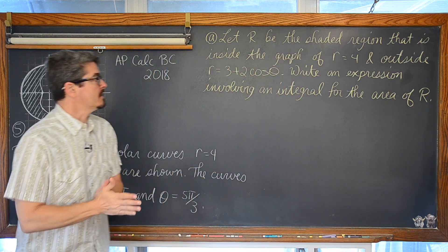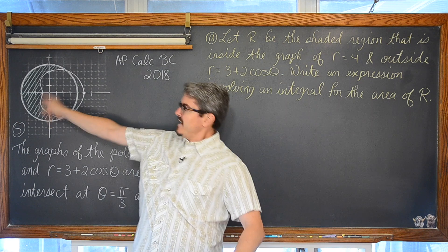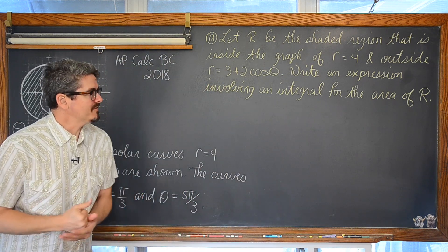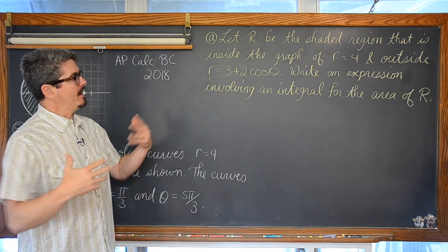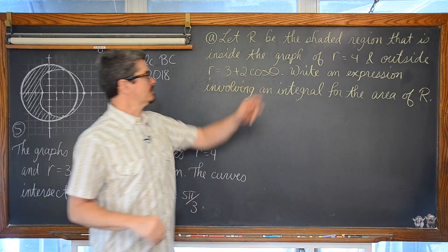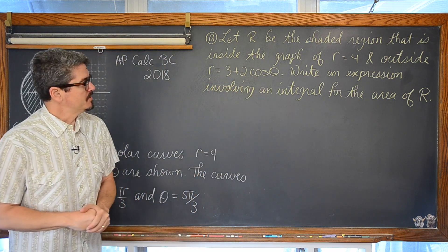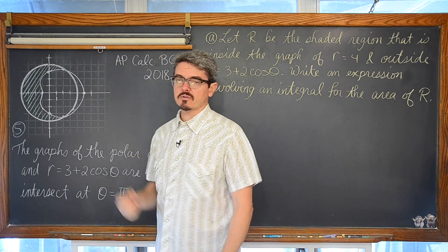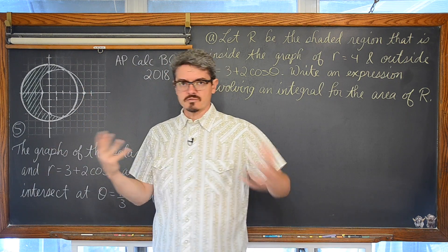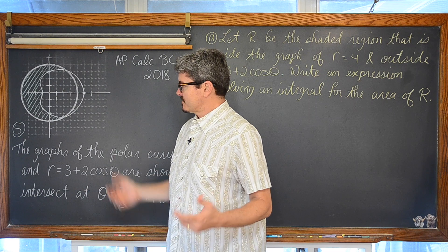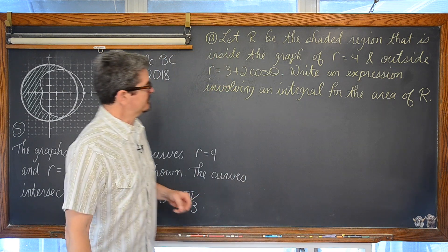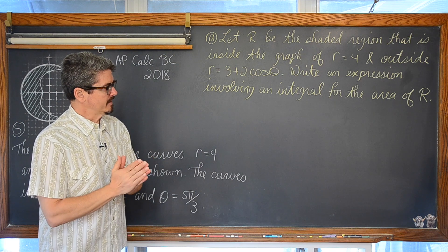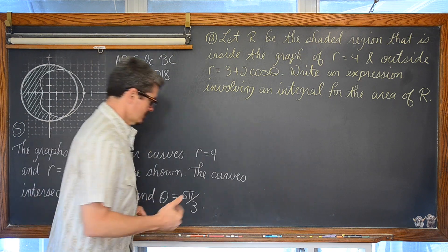Now in part A it says, let R be the shaded region — right there in green — that is inside the graph of r is equal to 4 and outside the graph of r is equal to 3 plus 2 cosine of theta. Write an expression involving an integral for the area of R.